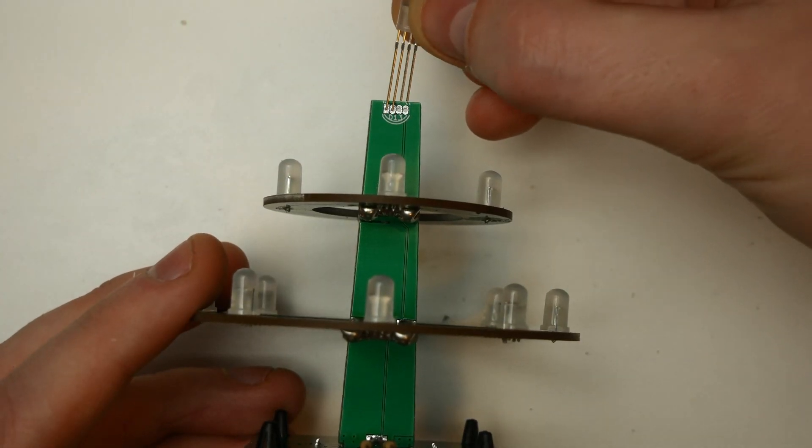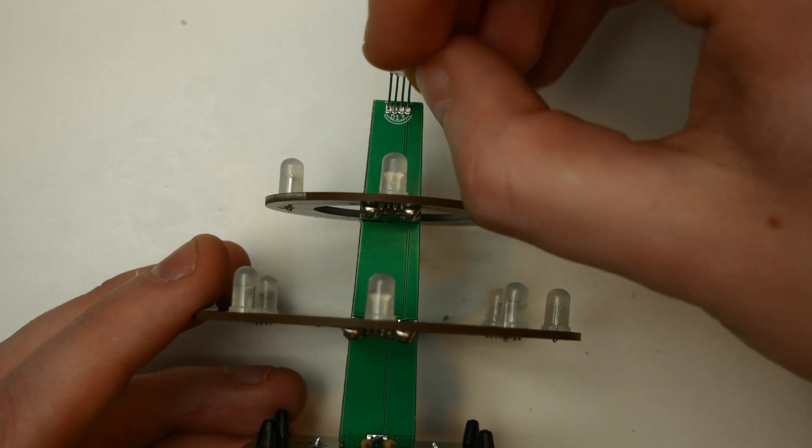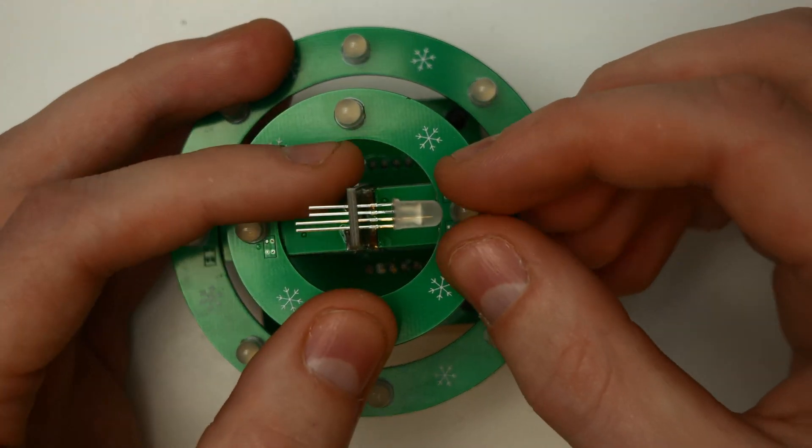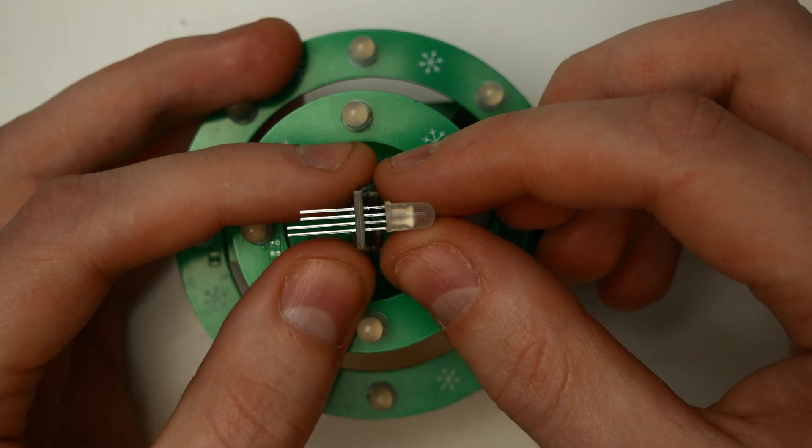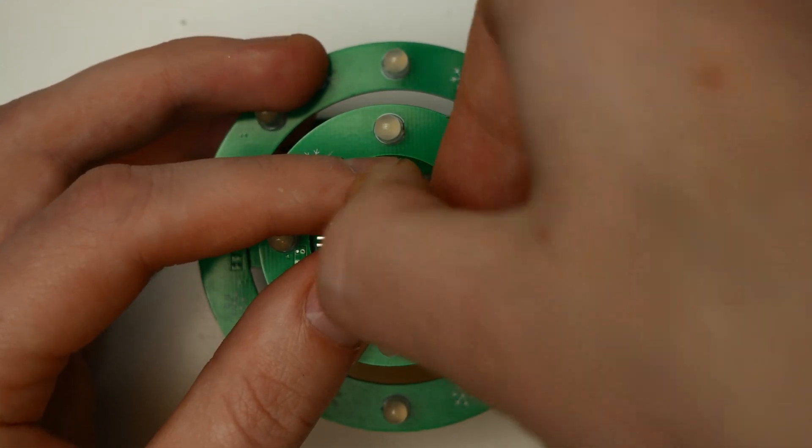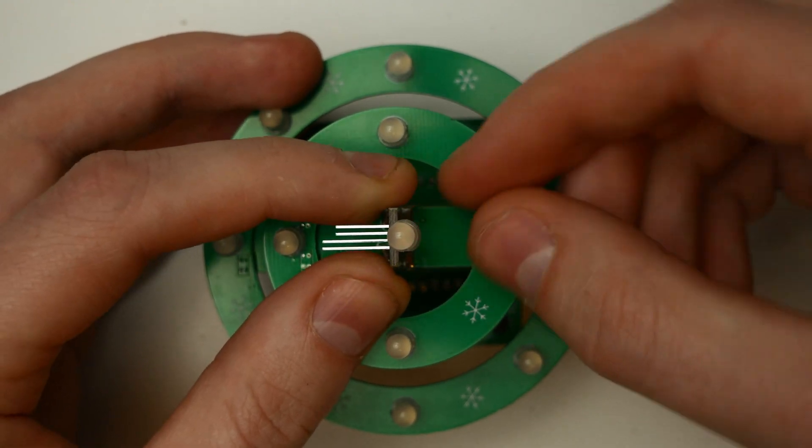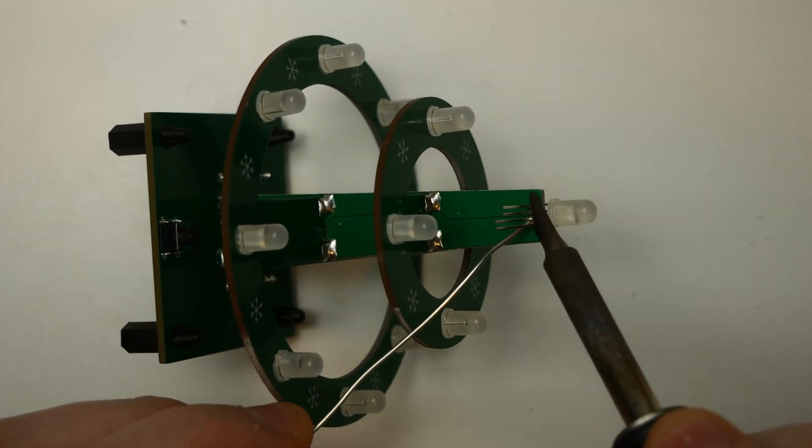This brings us to the last LED which goes into the top of the trunk. Again the two long legs must be on the left. Don't put the LED all the way in because it has to be bent upwards. After that this can also be soldered in place.